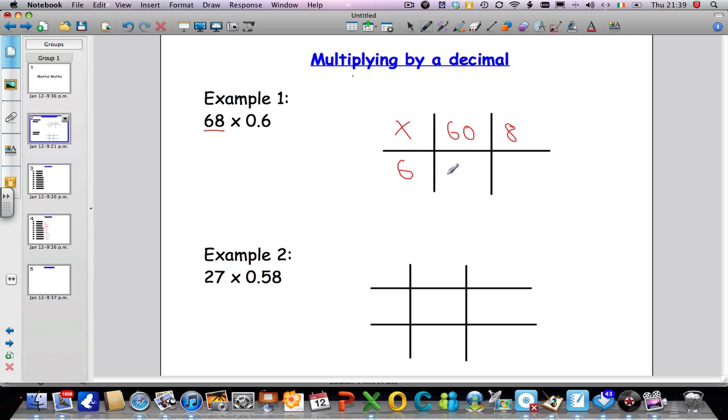So I'm going to do 6 times 6 gives me 36 and we got that extra 0 there. We do 6 times 8 is 48 and like before we're going to add these numbers together. So I'm going to do 360 and I'm going to add 48 to it.